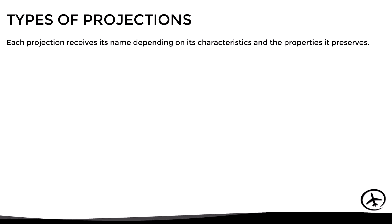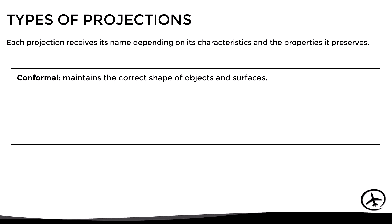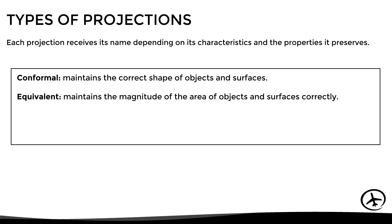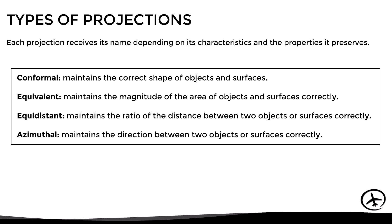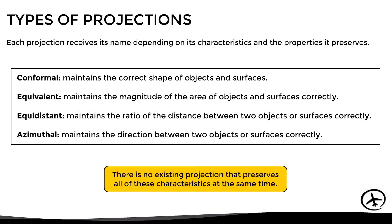Each projection receives its name depending on its characteristics and the properties it preserves. A conformal projection maintains the correct shape of objects and surfaces. An equivalent projection maintains the magnitude of area correctly. An equidistant projection maintains the ratio of distances correctly. An azimuthal projection maintains the direction between two objects or surfaces correctly. Unfortunately, there is no existing projection that preserves all of these characteristics at the same time.